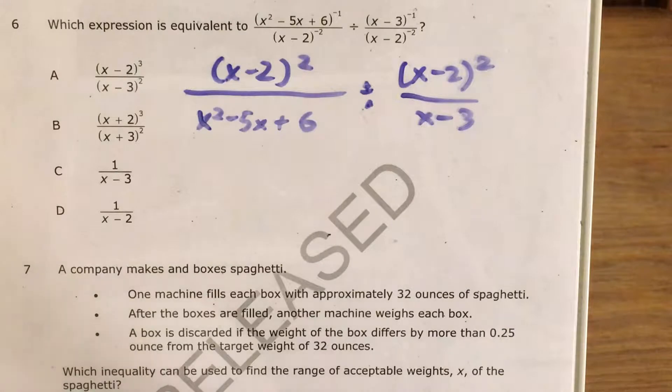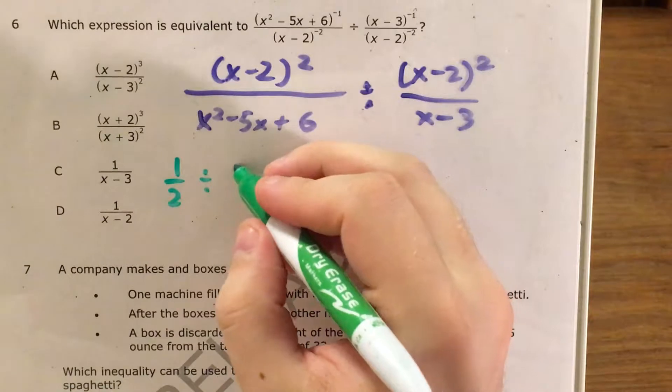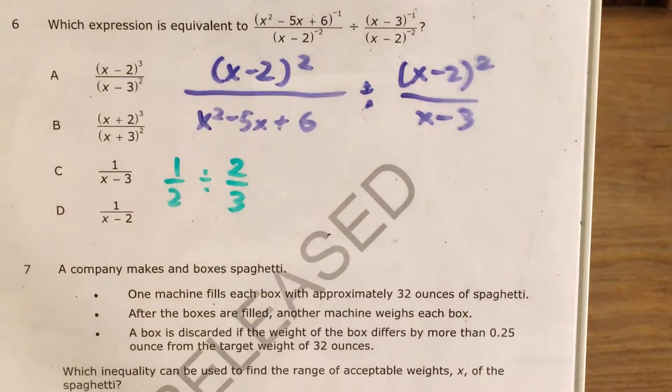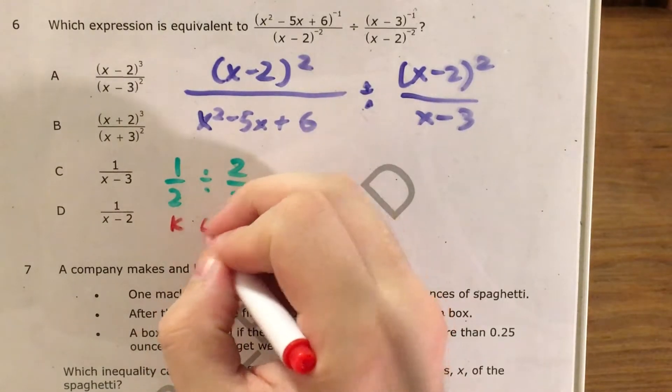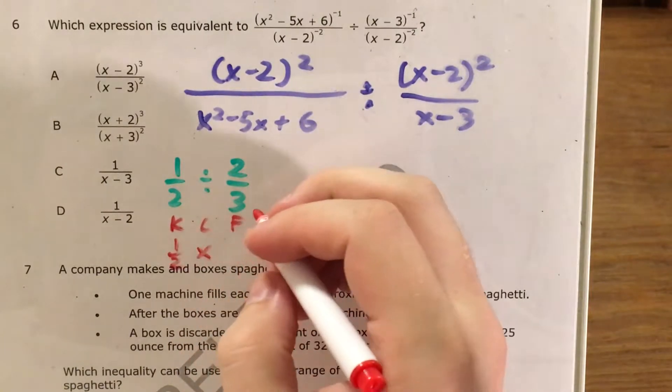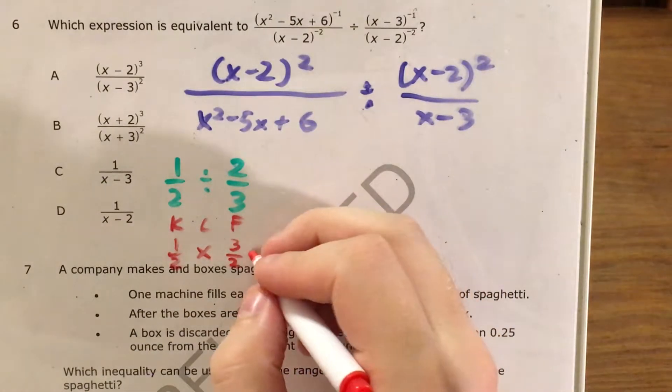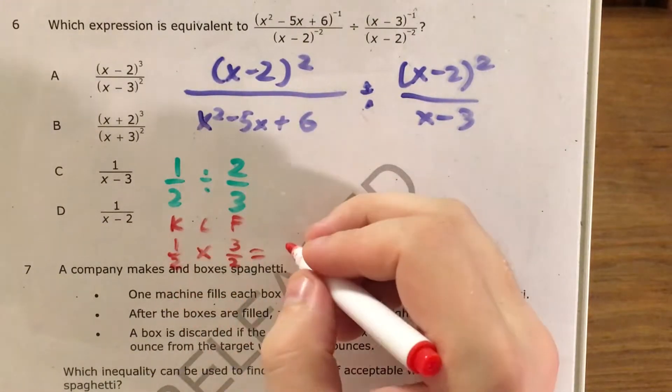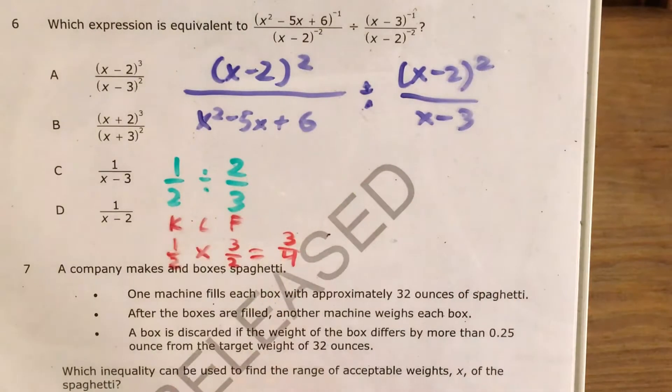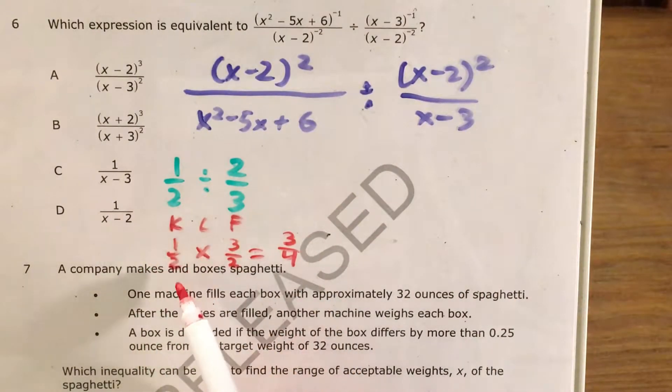But how do we divide fractions? Well let's say I were to write the fractions 1 half divided by 2 thirds. The way I would solve that would be, you might remember this trick, I would use keep change flip. I would keep 1 half the same, change dividing to multiplying, and flip 2 thirds to 3 halves. And now I just multiply across my numerators and denominators. 1 times 3 is 3, 2 times 2 is 4. So 1 half divided by 2 thirds, I change that to 1 half times 3 halves, and it gave me 3 fourths.